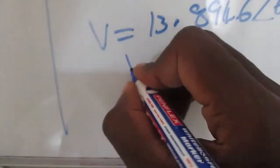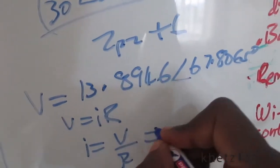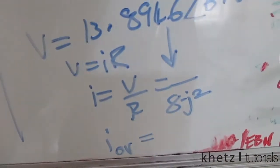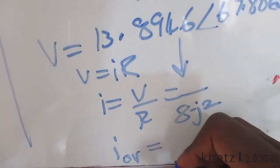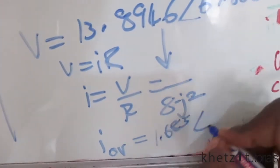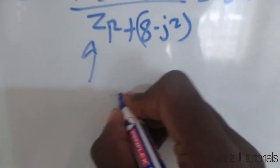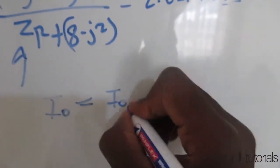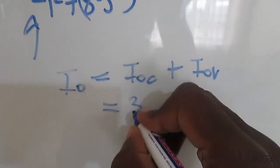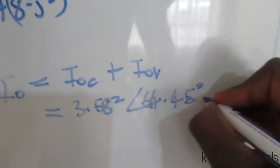Now that we have the voltage across 8 − j2, we use Ohm's law: I = V / R. Dividing this voltage by 8 − j2 gives IO due to the voltage source: 1.685 with an angle of 81.84 degrees in amperes. The final IO is the sum of both contributions — IO = IO(current source) + IO(voltage source) — giving a final answer of 3.582 with an angle of 64.45 degrees in amperes.